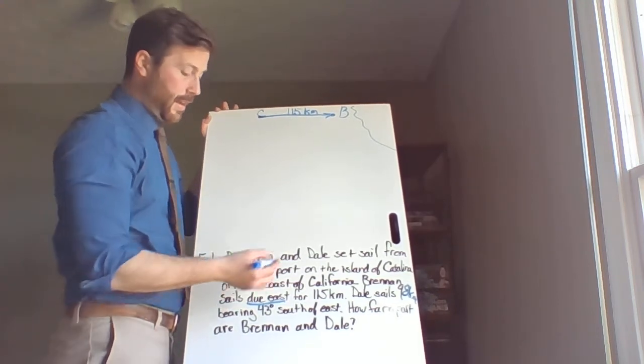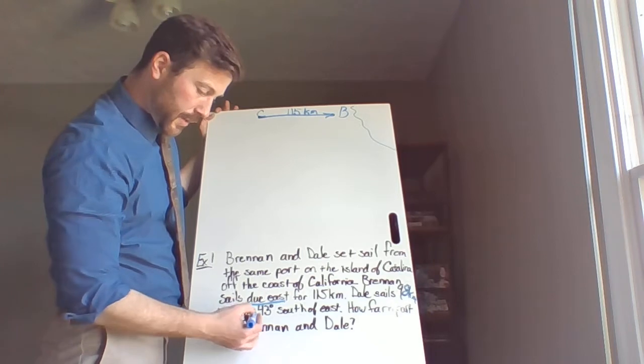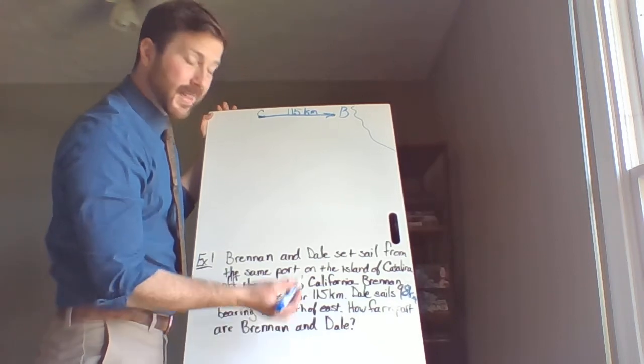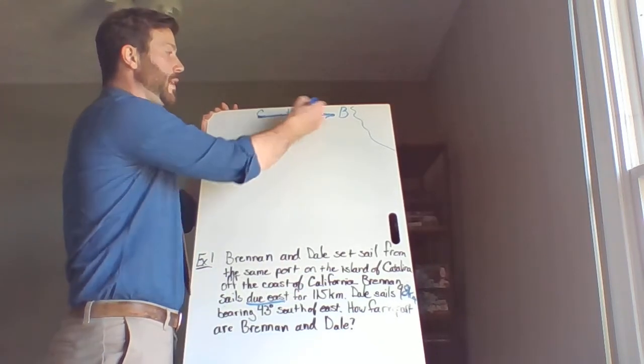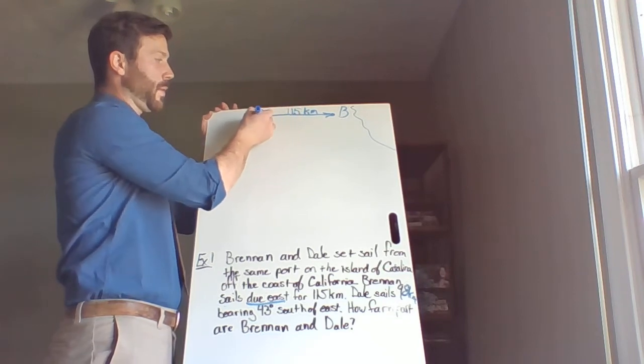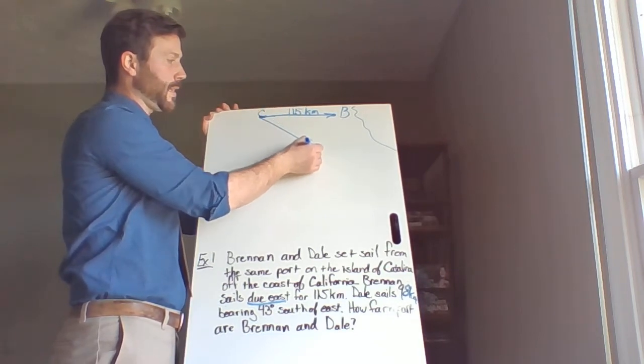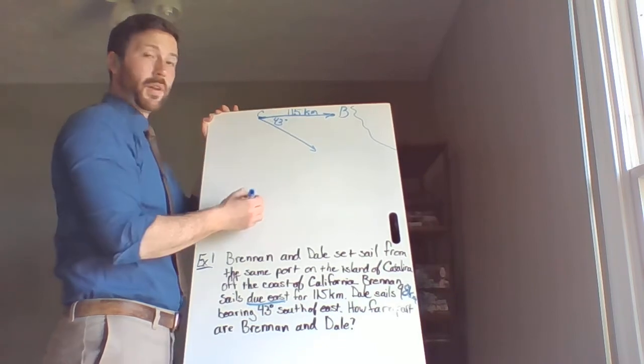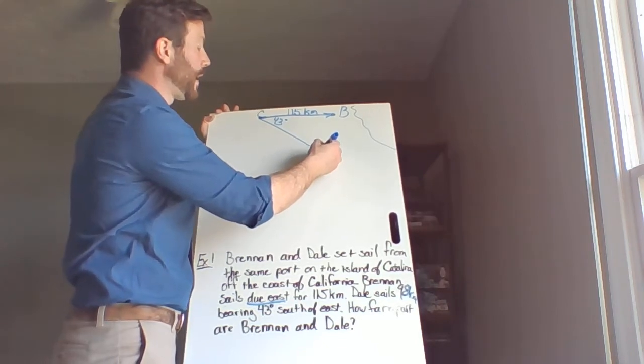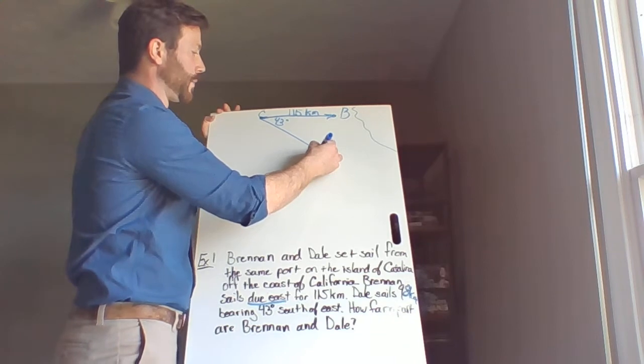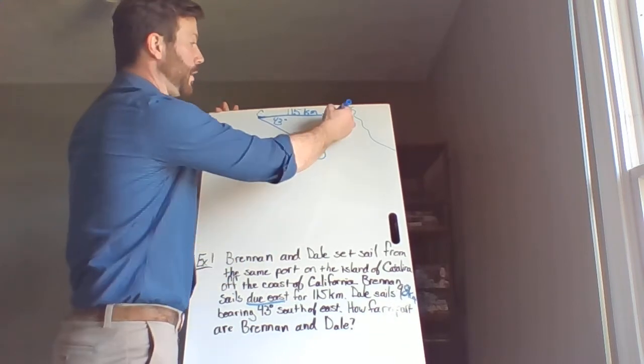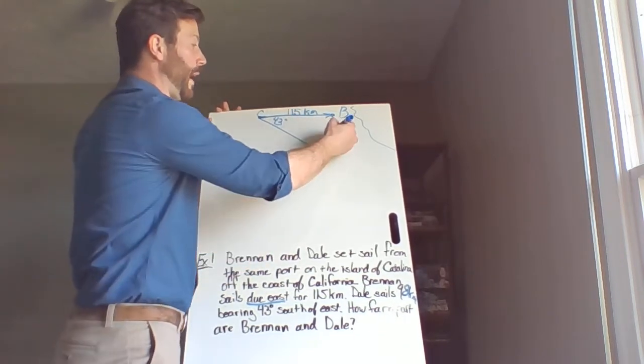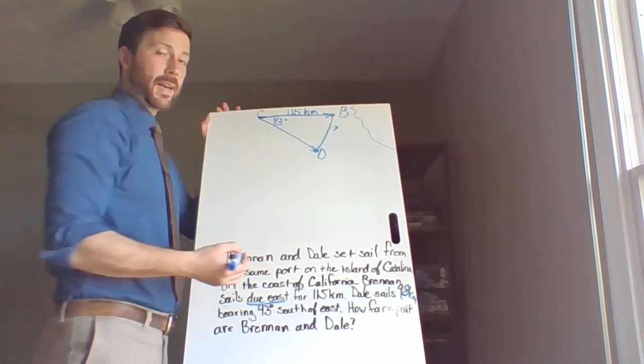Dale, on the other hand, goes and sails at a bearing of 43 degrees south of east. So if this is east, south is going to be this way. And he's 43 degrees south of east. So that means that this angle is 43 degrees. And Dale ends up right here. Now here's our triangle. And we want to know how far apart are Brennan and Dale?